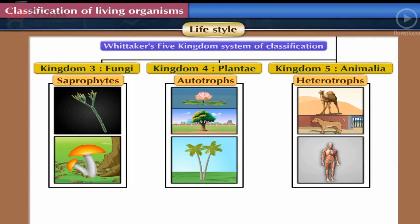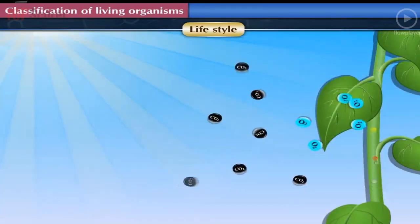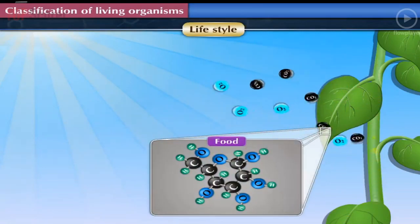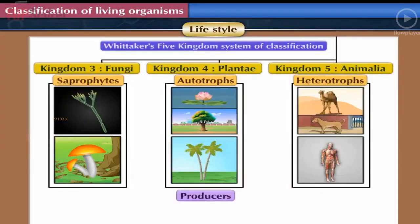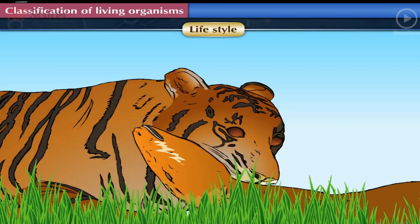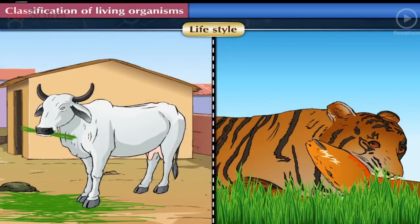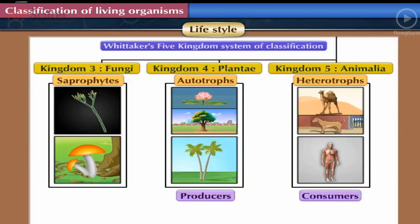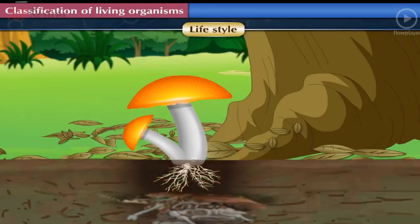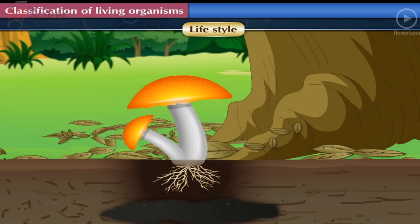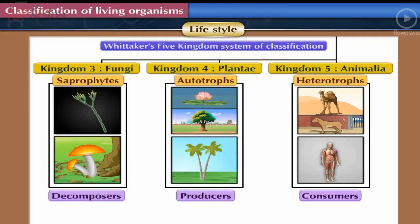Lifestyle: Whittaker also considered the lifestyle of organisms while classifying them. Since plants can make their own food, they are termed producers. Animals get food from other animals or plants, so they are termed consumers. Fungi get their food from dead and decaying organisms and in turn decompose them, so they are termed decomposers.